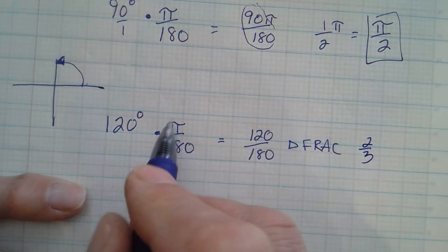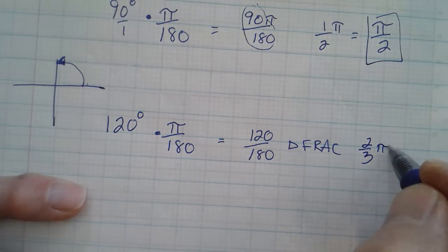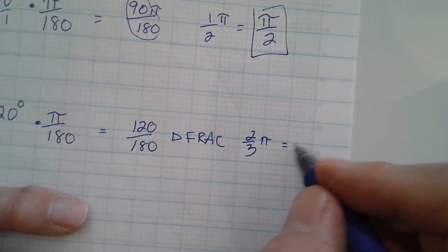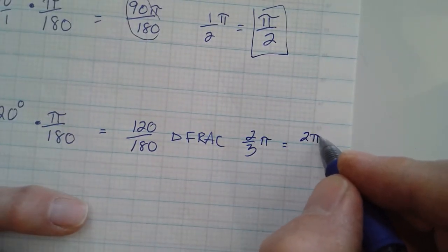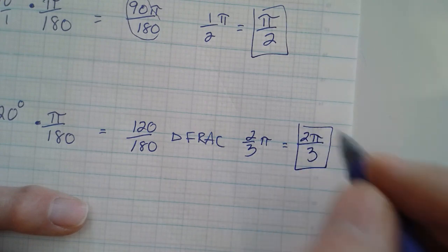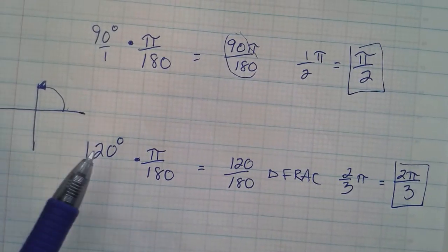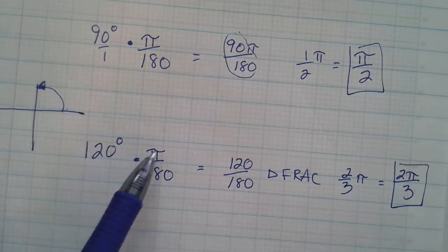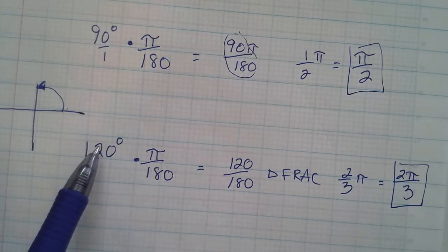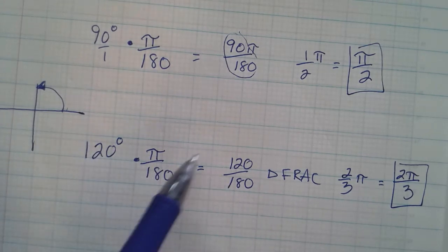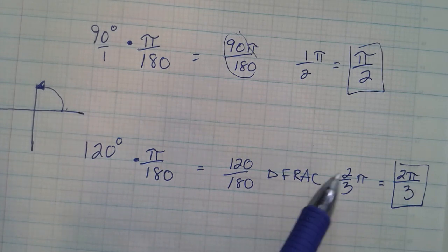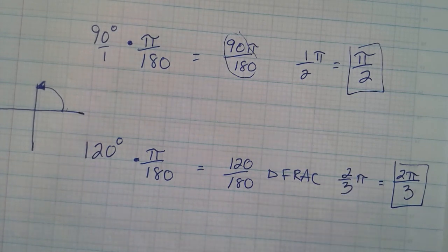So we get two-thirds, but we still have the π there. So it's two-thirds π. So we would say, we always move the π to the top, 2π over 3. So that's our answer. So you can rely on the calculator. If we're going degrees to radians, just ignore the π and just do 120 over 180, frac it, and you get the fraction, and then toss the π up on top.